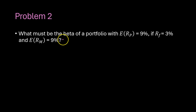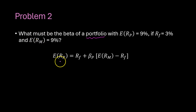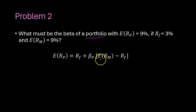Let's do another problem. What must be the beta of a portfolio that has an expected return of 9%? You're told that the risk-free rate is 3% and the expected return on the market is 9%. Note that this is the expected return on the market — not the risk premium — it is the overall return on the market. The Capital Asset Pricing Model says the expected return on the portfolio equals the risk-free rate plus the beta of the portfolio times the expected return on the market minus the risk-free rate, which is the risk premium.